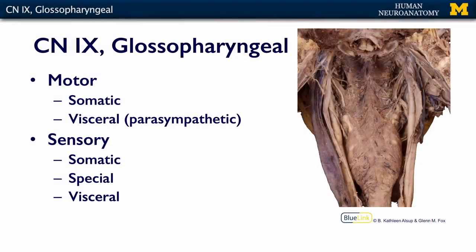Cranial nerve 9, the glossopharyngeal nerve, is one of the more complicated cranial nerves because it has so many different components. It has a motor component which is both somatic and visceral, going to skeletal muscle and a gland. It also has multiple sensory modalities: somatic sensory, special sensory, and visceral sensory. In this image from the posterior aspect of the pharynx, the glossopharyngeal nerve is lying along the only muscle it innervates — the stylopharyngeus muscle.